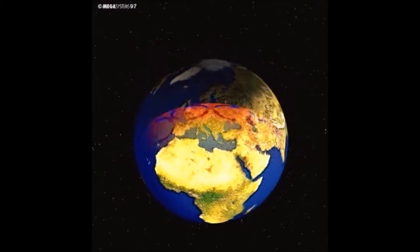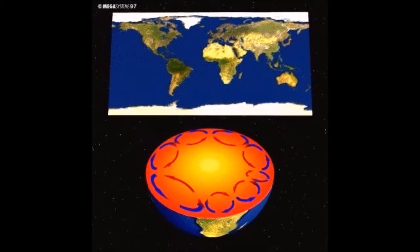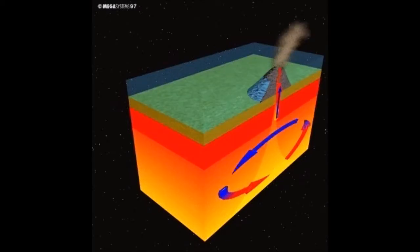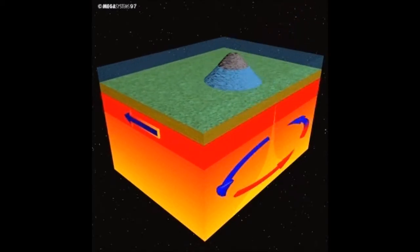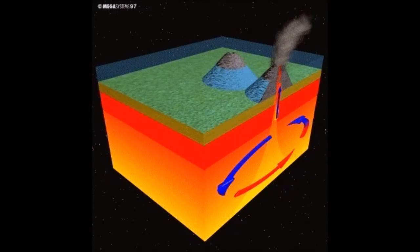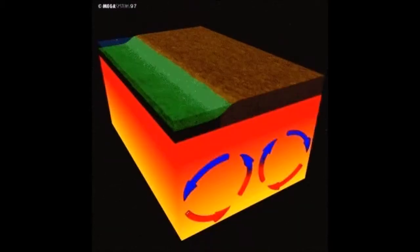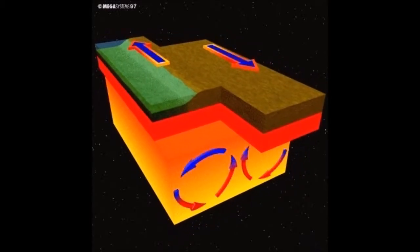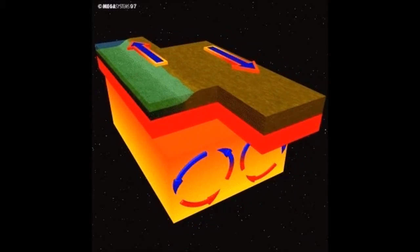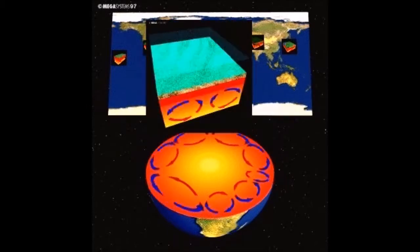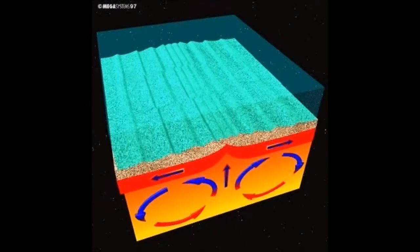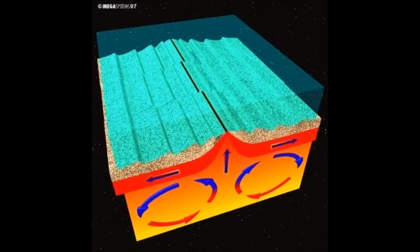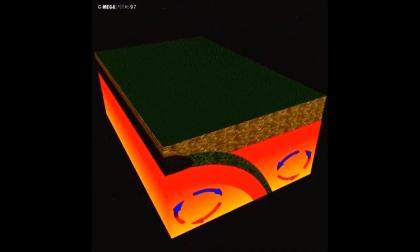According to the theory of plate tectonics, the lithosphere is composed of several large plates that float on the asthenosphere, which is the liquid layer in the Earth's mantle. The plates move as a result of convection currents in the Earth's mantle under the lithosphere. Convection is the movement of liquid material that is heated from underneath, rises, and cools on top. Hot material has a lower density and rises, while cold material has a higher density and thus sinks.